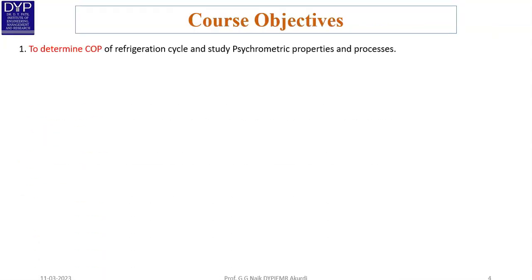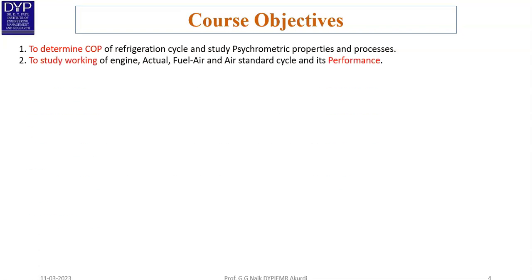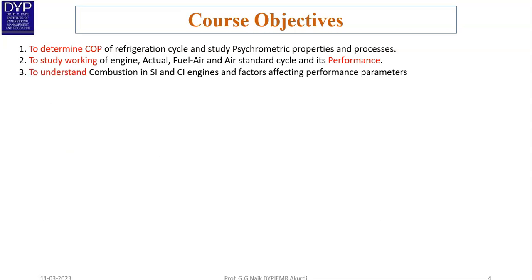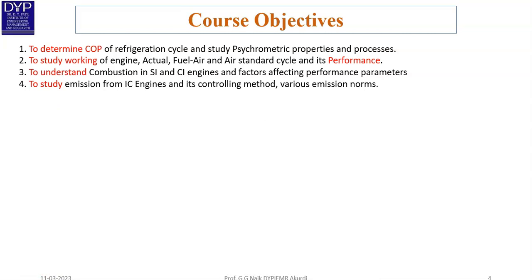The course objectives are: first, to determine the COP of a refrigeration cycle and study psychrometric properties and processes; second, to study the working of engines, actual air-fuel and air standard cycles, and their performance; third, to understand combustion in SI and CI engines and factors affecting performance parameters; and fourth, to study emissions from IC engines and controlling methods, including various emission norms.